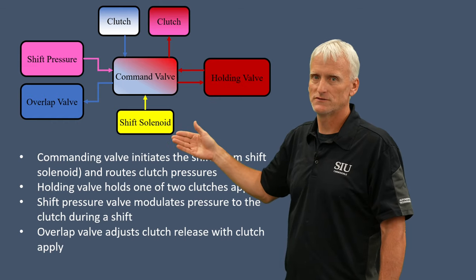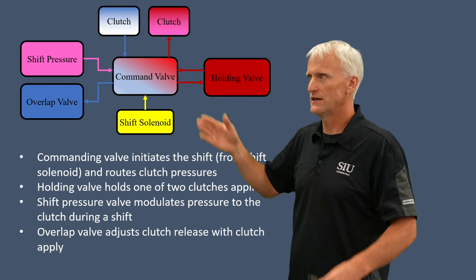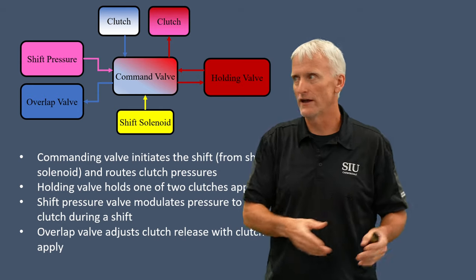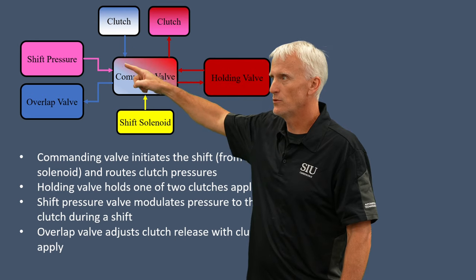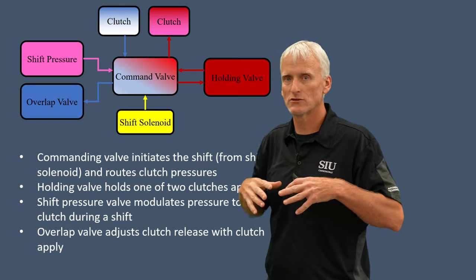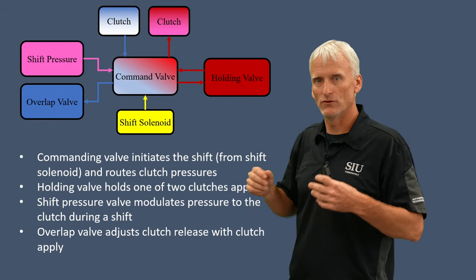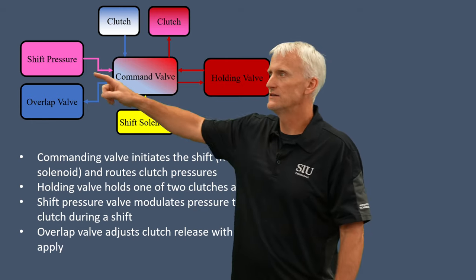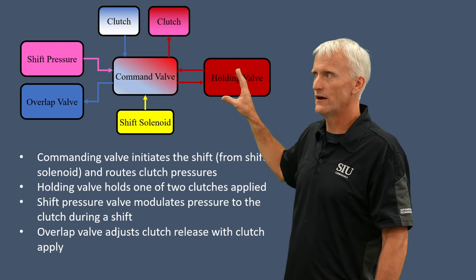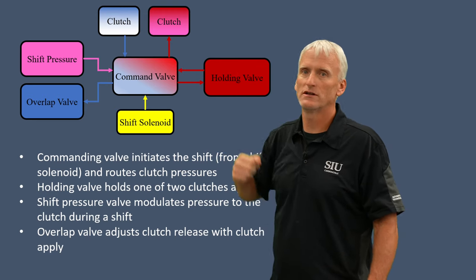The shift solenoid turns on for only about two seconds and it gets the command valve to move. When it does that, it's going to take the clutch that was applied and direct it to the overlap valve — that's where that fluid drains out and releases its pressure. The overlap valve controls how quickly the fluid can release. Then it directs shift pressure through the command valve to the clutch that's supposed to apply. The holding valve shuttles back and forth, and after the shift is complete it holds pressure into whichever clutch is supposed to be applied.